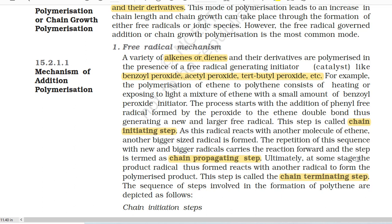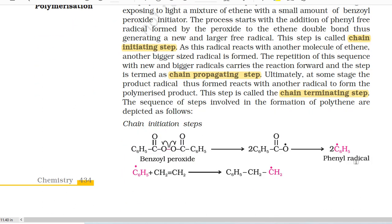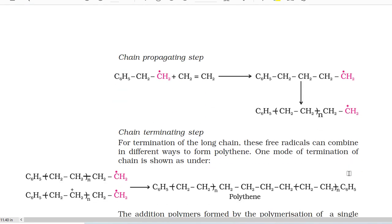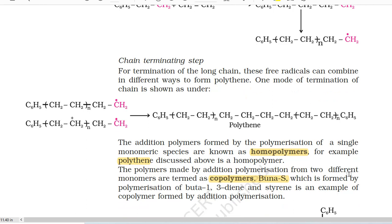This step is called chain initiating step. As this radical reacts with another molecule of ethene, another bigger sized radical is formed. The repetition of this sequence with new and bigger radicals carries the reaction forward and the step is termed as chain propagating step. Ultimately, at some stage, the product radical thus formed reacts with another radical to form the polymerized product. This step is called the chain terminating step. The sequence of steps involved in the formation of polythene are depicted as follows: chain initiation step, chain propagating step, chain terminating step. For termination of the long chain, these free radicals can combine in different ways to form polythene.